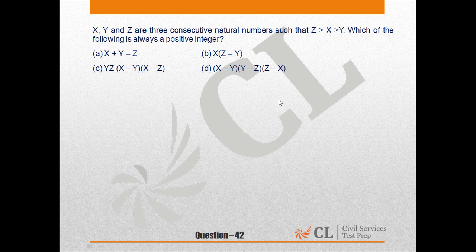In this question, it is given that three consecutive natural numbers are there. If Z > X and X > Y, which of the following is always an integer? Well, look at the options.